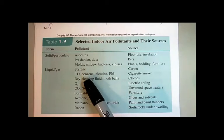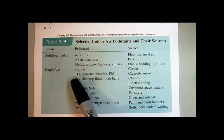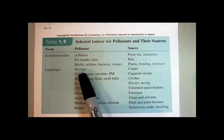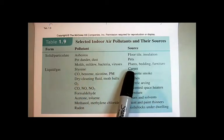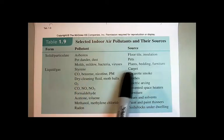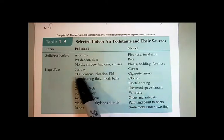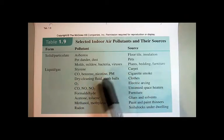Then there are liquids and gases. Styrene, for example, is a plasticizer in some polymers that can come from carpet — it's volatile and can evaporate out of new carpets. Carbon dioxide, benzene, nicotine, and particulate matter all come from cigarette smoke.